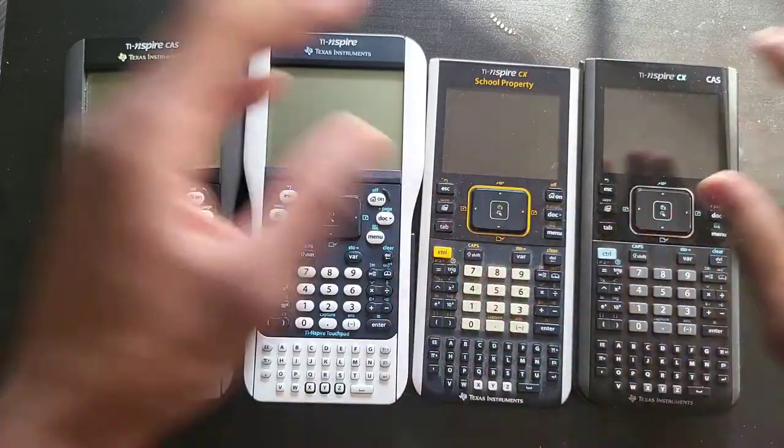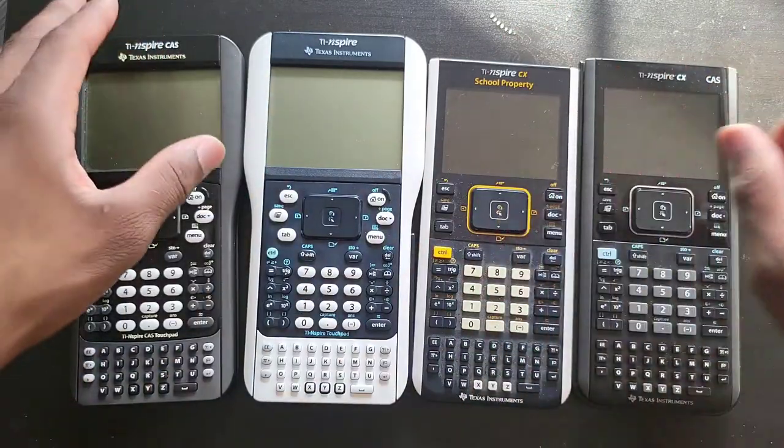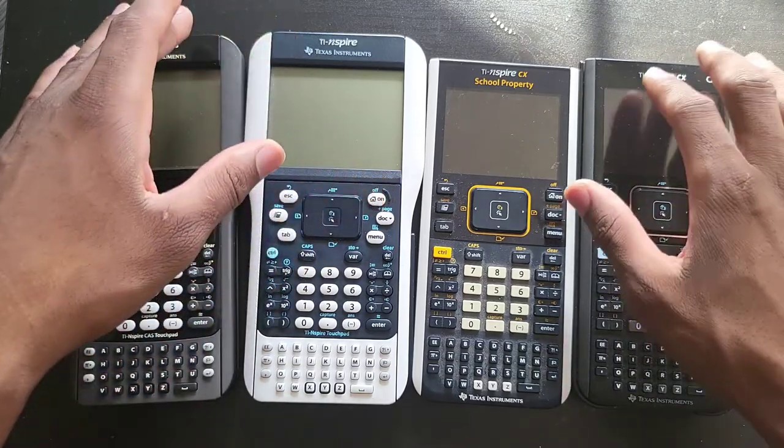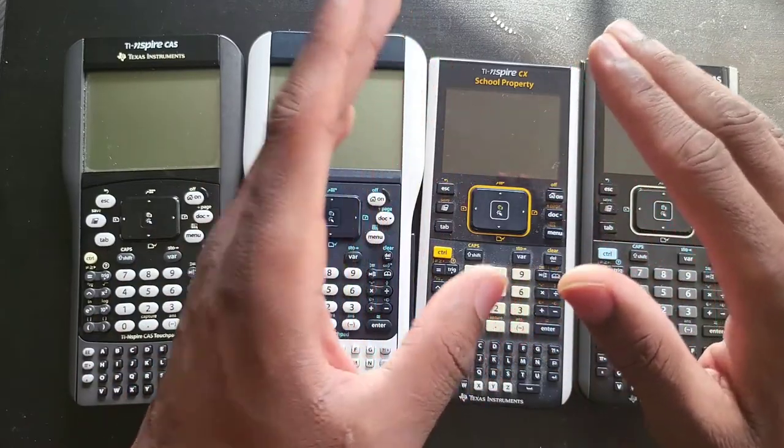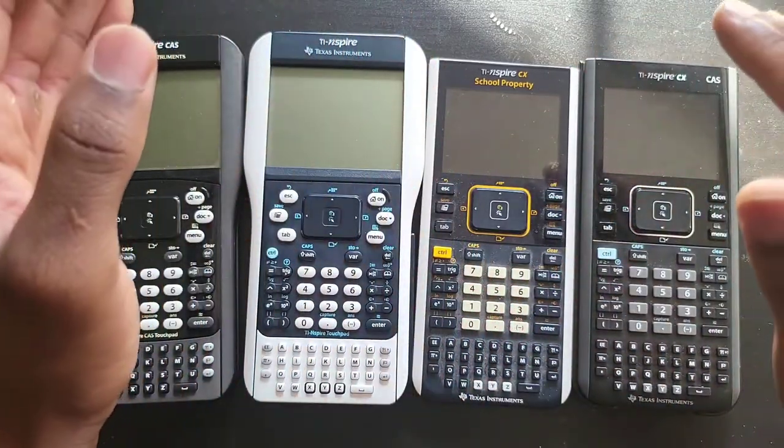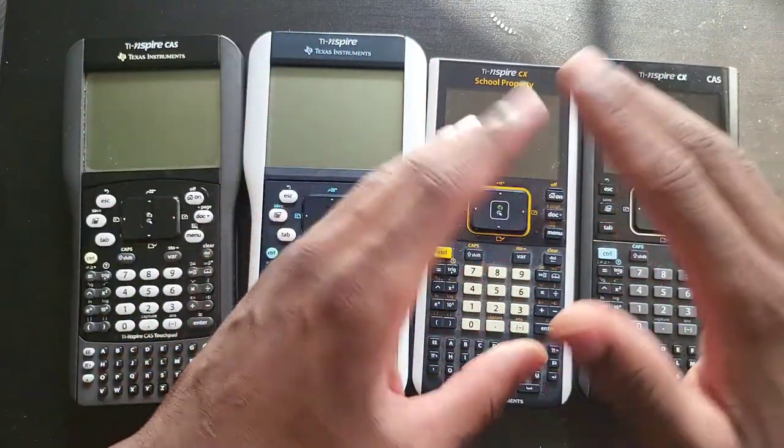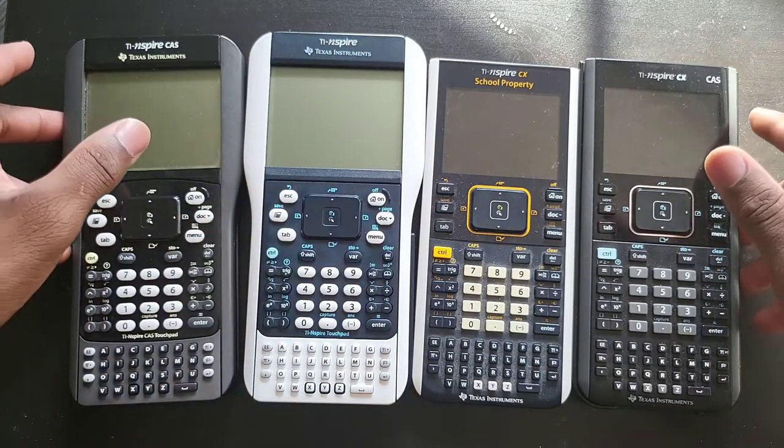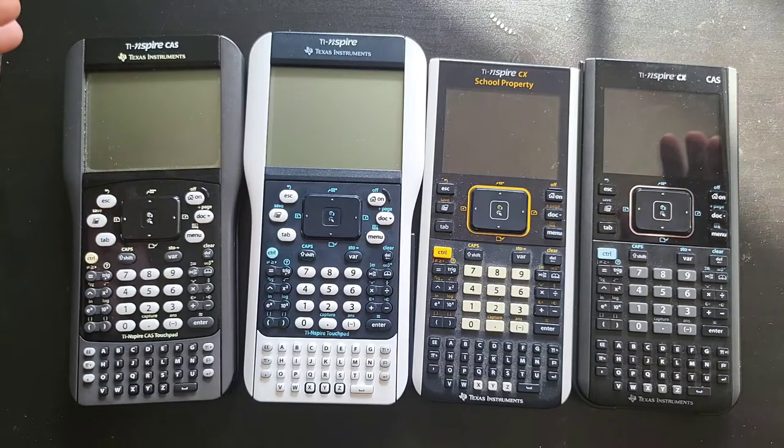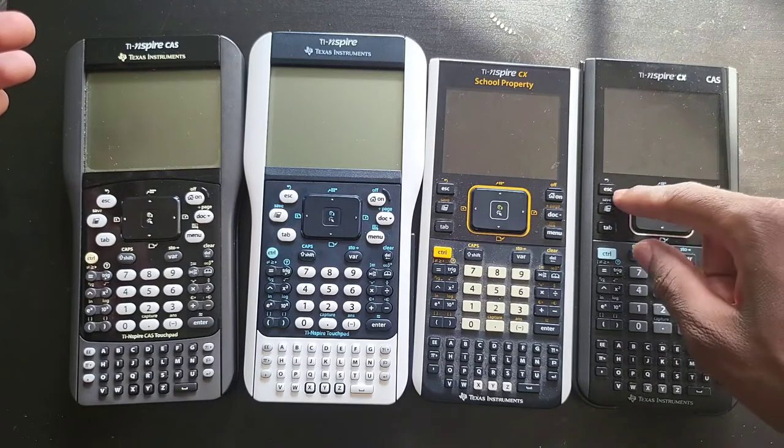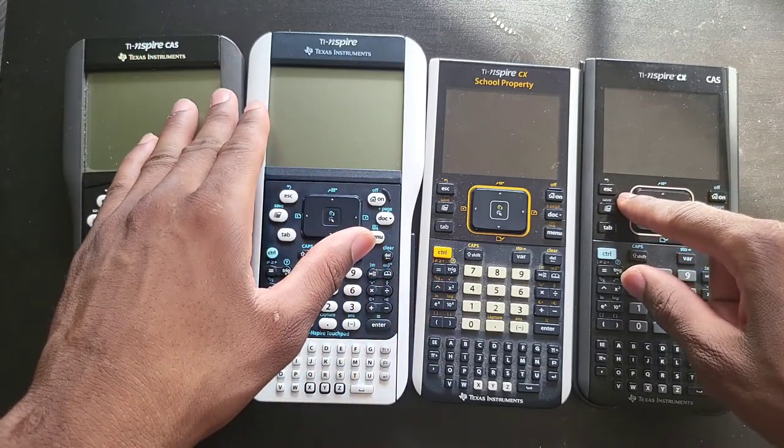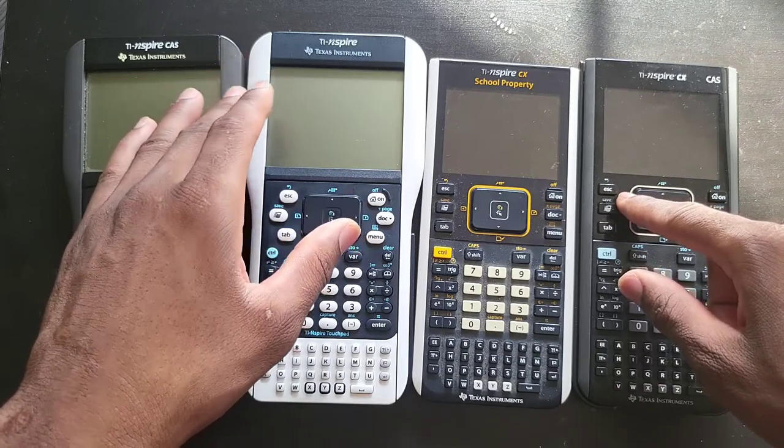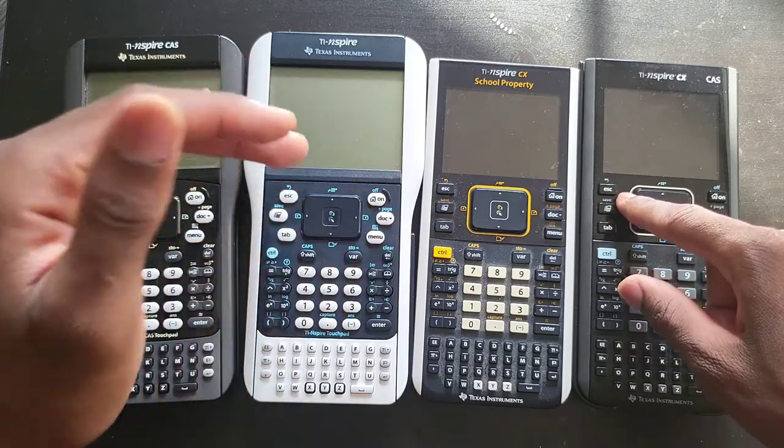This one has 132 megahertz, these have 90 up to 120 megahertz. Don't get fooled by those numbers because they don't really mean anything. I've had these calculators for a while now and I could not find a single task that this one performed faster than the non-color models. It was actually the other way around, which was very interesting to me.